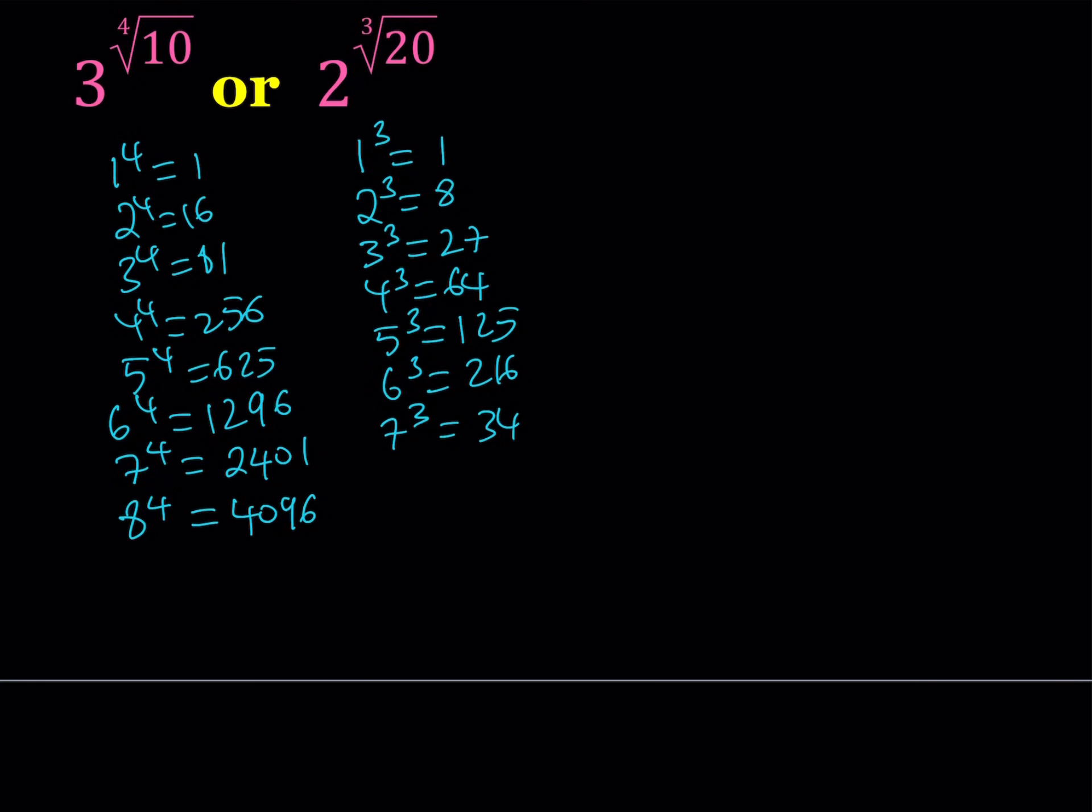7 to the 3rd power is 343. If you've dealt with numbers a lot, you can memorize these easily. Not too hard, but you don't have to. 9 cubed is 729, 10 cubed is obviously 1,000, and 11 cubed is 1,331.